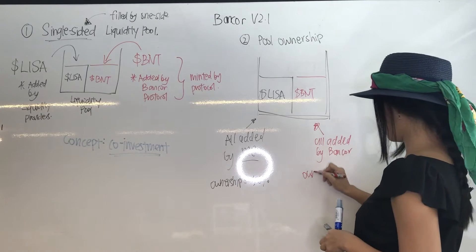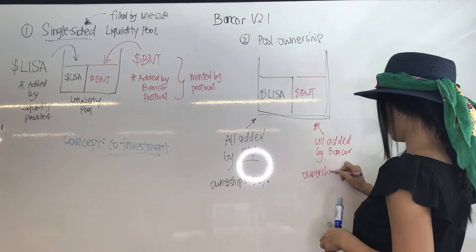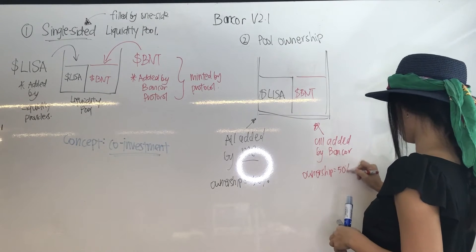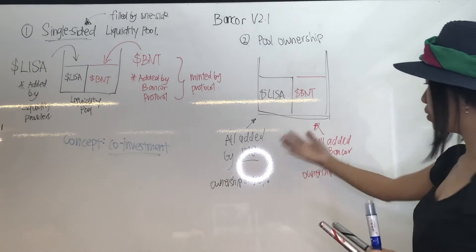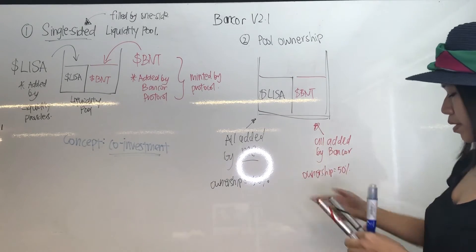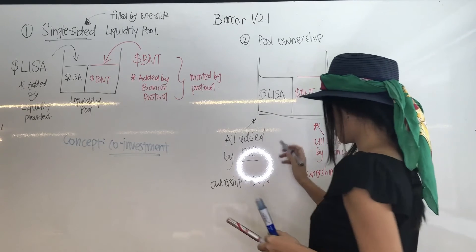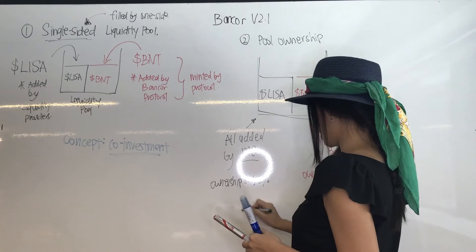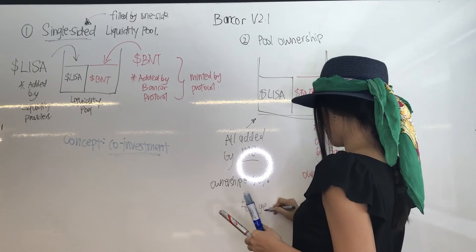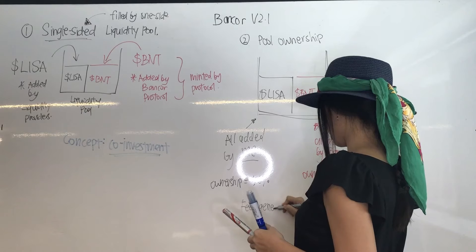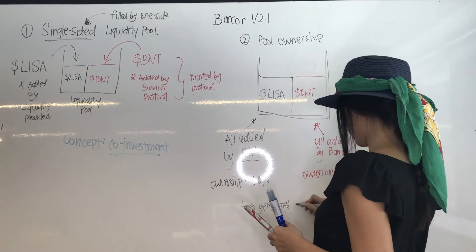What does that mean? It means that for any fees generated, 50% of the fees will go to me and 50% will go to the protocol itself — so the protocol can be generating revenue at the same time. That's the entire idea of co-investment: you share your capital but you also share the gains.